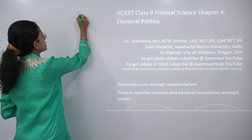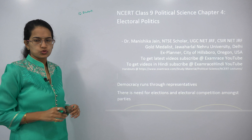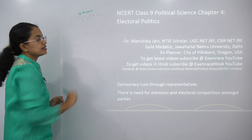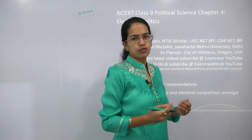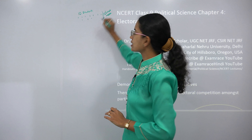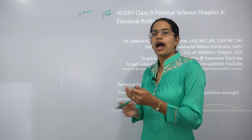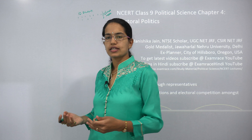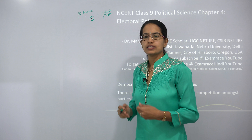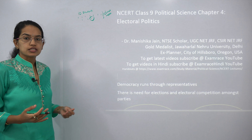Let's say you have 10 students in a class and the teacher wants to elect a class representative from those 10 students. The teacher can ask the 10 students to sit together and find out who would be the best fit for the position. That is a direct election where all the students can have their opinions, discuss things, and finally arrive at one class representative.